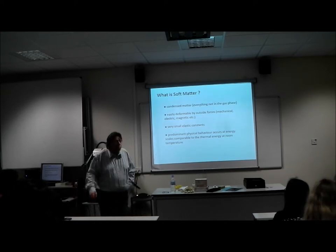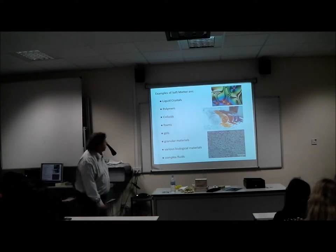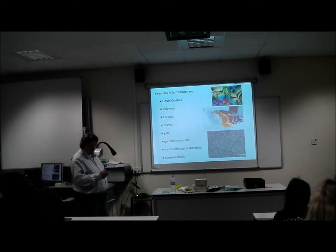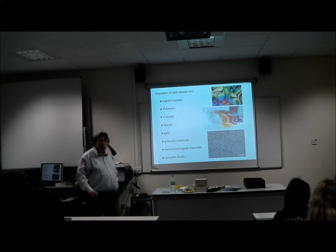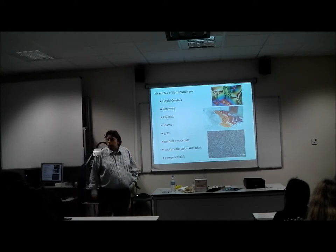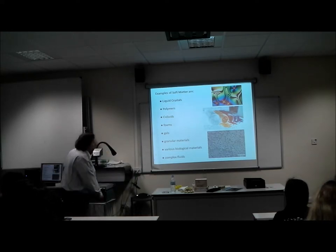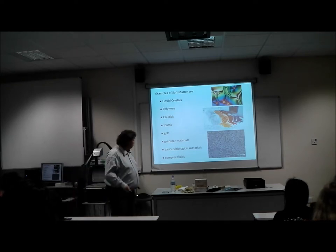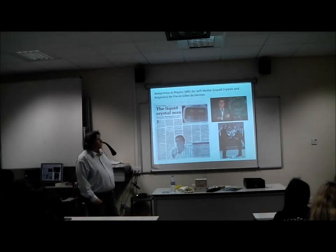Some examples of soft matter are liquid crystals, polymers, colloids — and these are in fact these: this is a liquid crystal, that's part of a polymer, these are colloids. Foams, gels, granular material like sand piles — easily deformable, you just kick it and it deforms. A variety of biological materials and what's called complex fluids, which is basically a combination of these.